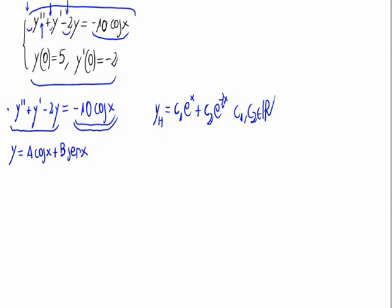It would also be the same if we had a sine instead of a cosine — it doesn't matter. The derivative of y_p is -a·sin(x) + b·cos(x), and the second derivative is -a·cos(x) - b·sin(x).